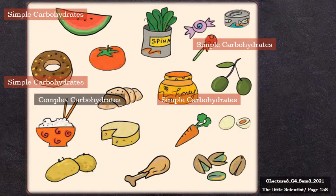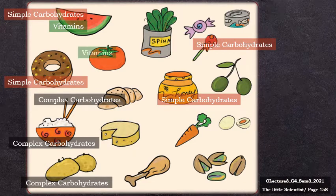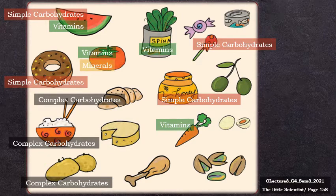The croissant, the rice, and the potato are all sources of starches — complex carbohydrates that will be broken down slowly in the body. Fruits and vegetables are rich in vitamins. So watermelon, tomato, spinach, and carrot are all sources of vitamins and also of minerals.